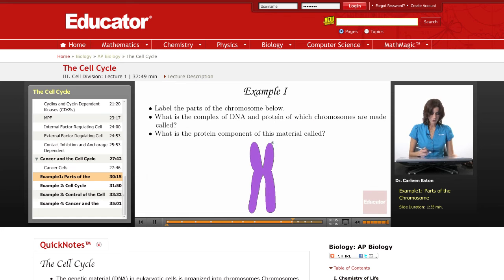So, parts of the chromosome. Well, first of all, I see that there are two sister chromatids here, and each of them has a short arm, and each of them has a long arm. And there are two sister chromatids, so we can label those sister chromatids.